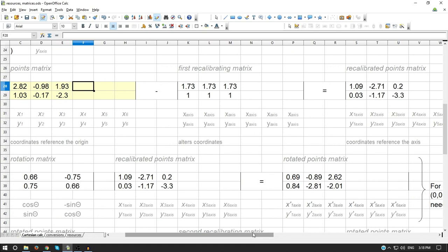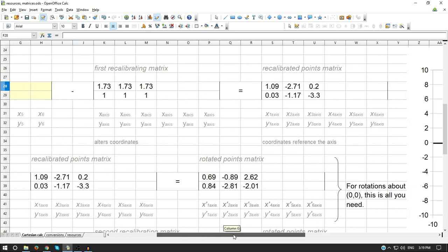So we subtract that matrix and we get these results, the calibrated points matrix. So these are the points in terms of the axis point. So now we take our results from here and we put that second and we put our rotation matrix here. We multiply the matrices, we get the rotated points matrix.